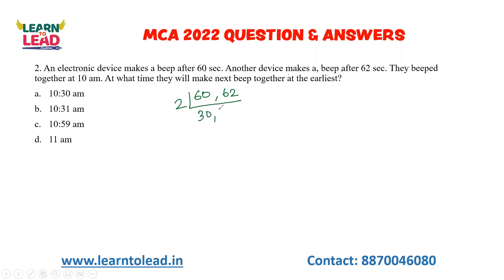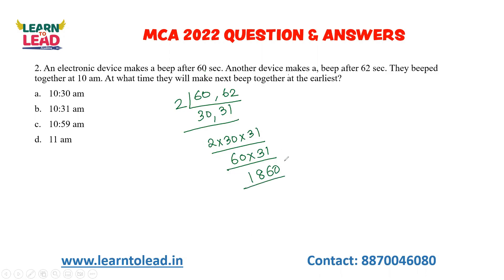2 times 30 is 31. 2 times 30, 2 into 30 is 40, 2 into 30 is 60. 60 into 31. Working out: 6, 1, 8, 6, 0 — that gives 1860 seconds. To convert to minutes, divide by 60, which gives 31 minutes. So the first time they ring together again is at 10:31 a.m.